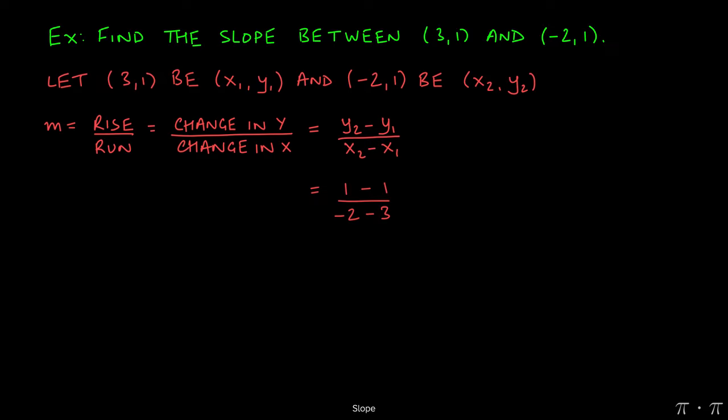Replacing the letters with the numbers, we see that y2 and y1 being the same number gives us 1 minus 1 in the numerator, and then for the denominator, negative 2 minus the 3 gives us negative 2 minus 3 down here.